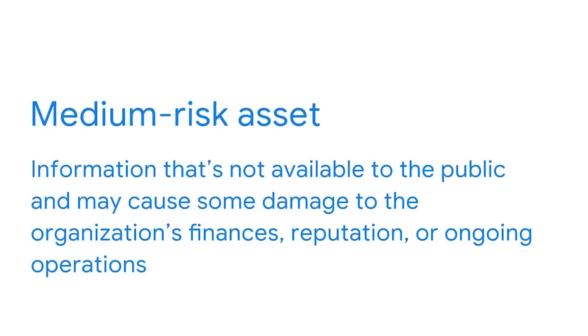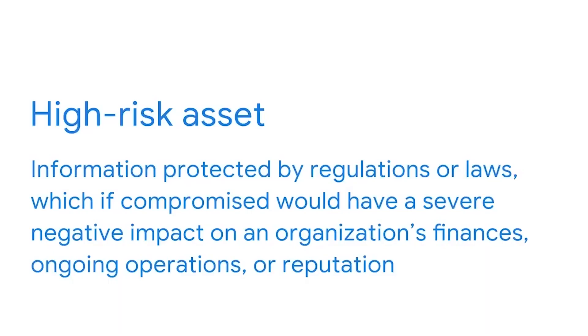Low-risk assets include public information such as website content or published research data. A medium-risk asset might include information that's not available to the public and may cause some damage to the organization's finances, reputation, or ongoing operations. For example, the early release of a company's quarterly earnings could impact the value of their stock. A high-risk asset is any information protected by regulations or laws, which, if compromised, would have a severe negative impact on an organization's finances, ongoing operations, or reputation. This could include leaked assets with SPII, PII, or intellectual property.